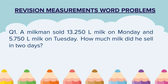Question 1. A milkman sold 13.250 litres of milk on Monday and 5.750 litres of milk on Tuesday. How much milk did he sell in 2 days? Please understand the question — they have told us about milk sold on Monday, milk sold on Tuesday, and then asked us to find the total milk sold.